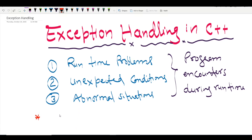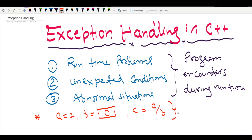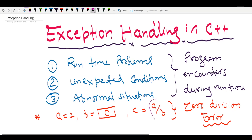Suppose you have a variable A with some value, maybe 1, then a variable B with some other value, and another variable C which calculates A divided by B. This program has no issue till now, but if a user enters 0 for B, there will be an abnormal situation — a division by zero runtime exception that will occur during runtime. This statement is the culprit.